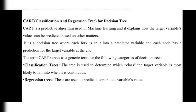CART serves as a generic term for two categories of decision trees. First, Classification Trees: the tree is used to determine which class the target variable is most likely to fall into. In decision trees, a lower value node goes to the left side and a higher value node goes to the right side.